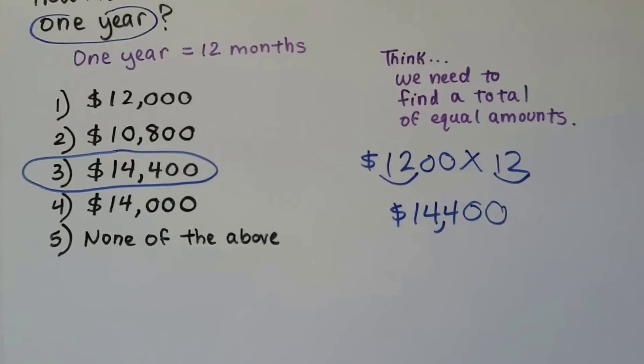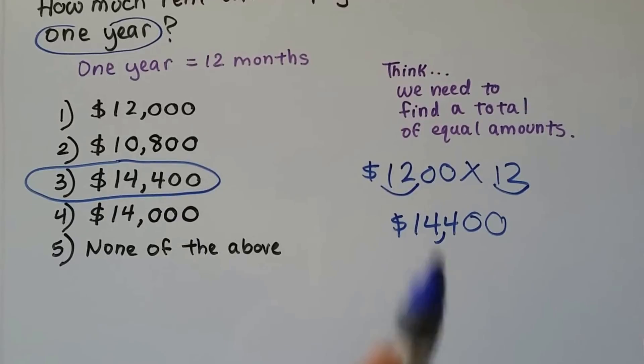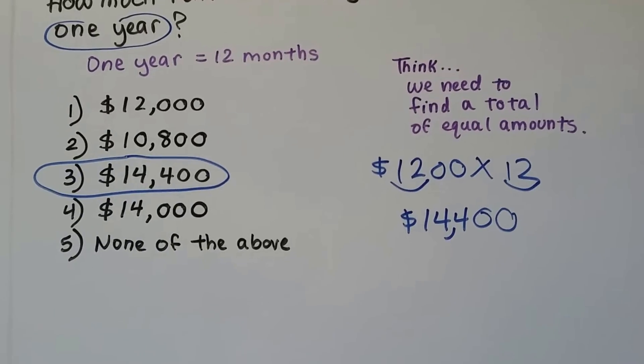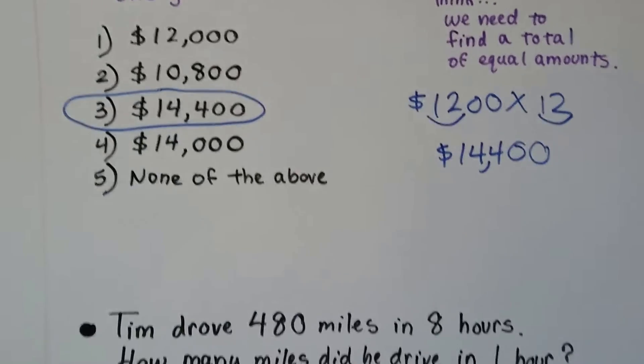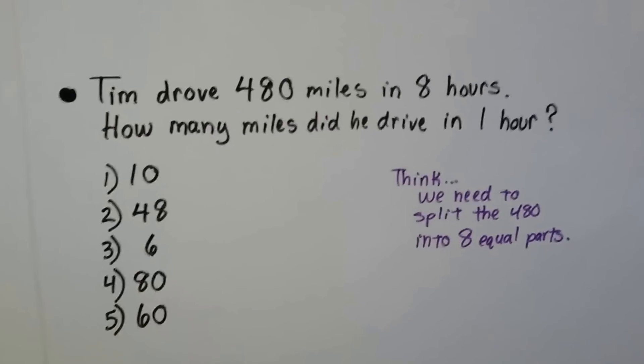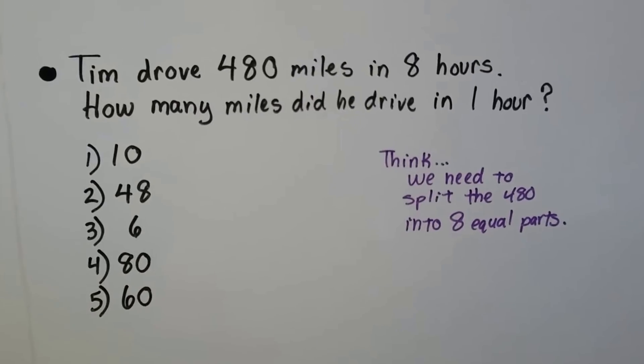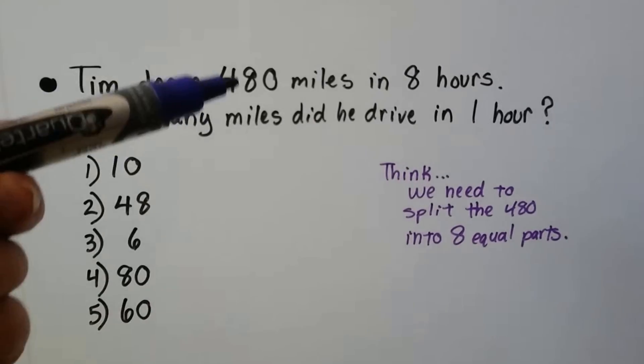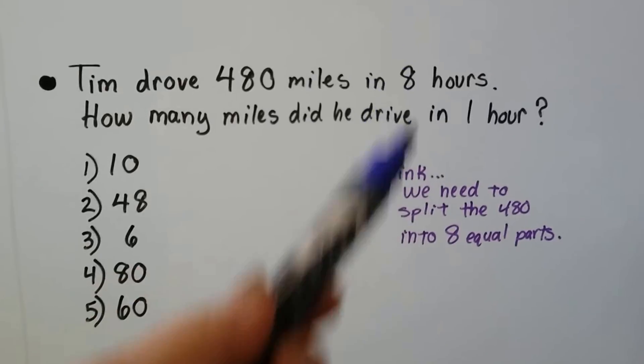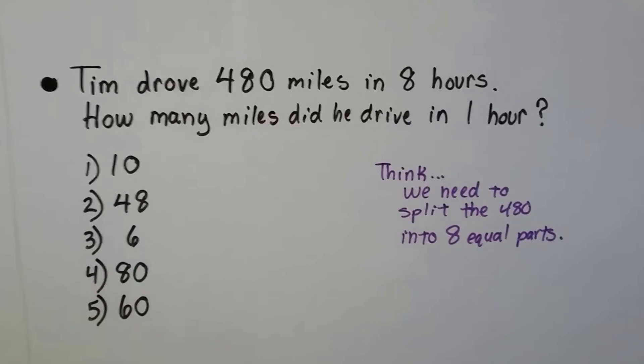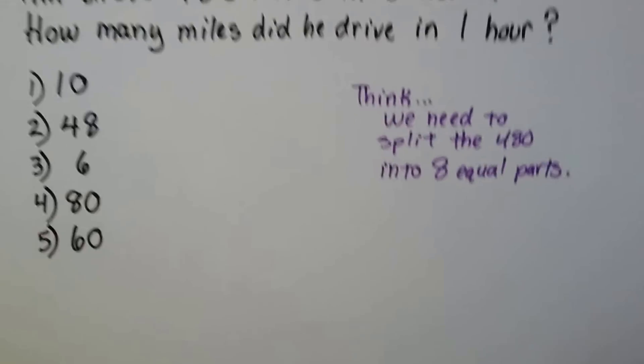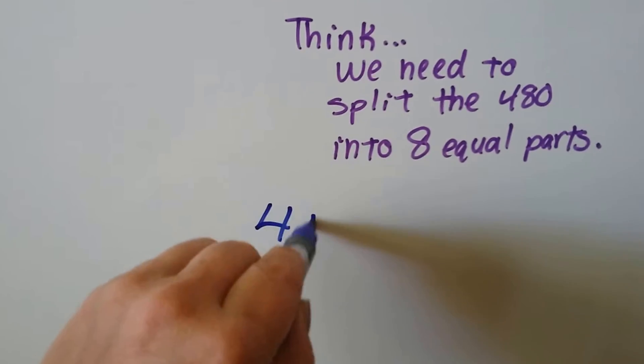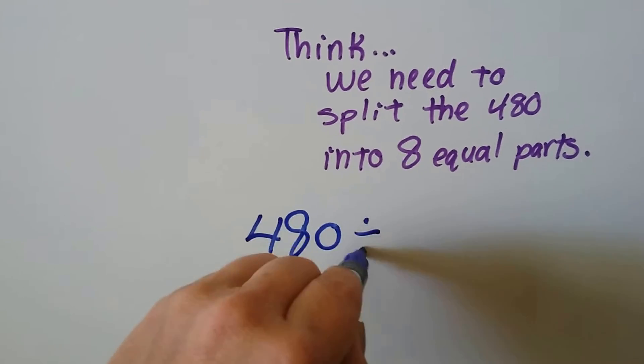I have videos showing how to do this, and I'll show you that in a second. Here, Tim drove 480 miles in eight hours. How many miles did he drive in one hour? We need to split the 480 into eight equal parts. That means we need to divide. We need to do 480 divided by eight using long division.